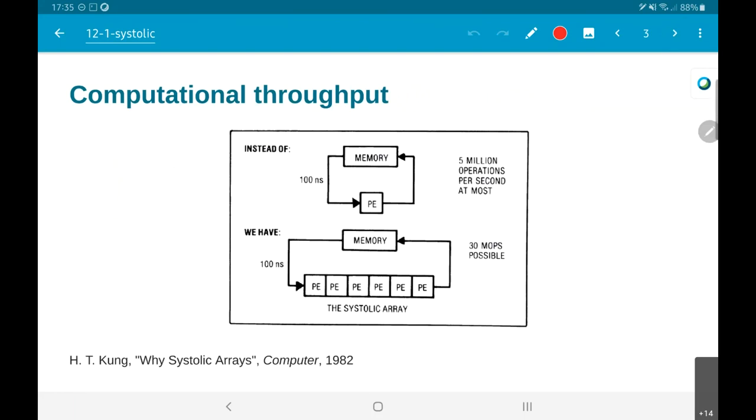What we are going to do now is basically look at this question why systolic arrays. This is straight away from that article of the same name. You can clearly see that this is 1982 because he is talking about a situation where the memory bandwidth is basically 10 megabytes per second, not 100 megabytes per second.